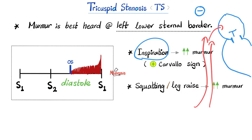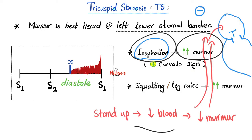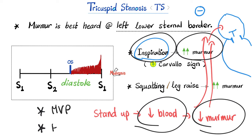Less blood means less murmur. For example, if you stand up suddenly, blood pools into the ankles away from the heart, decreasing blood across the tricuspid valve and decreasing the intensity of the murmur. The rule of more blood, more murmur and less blood, less murmur applies to all heart diseases — with two famous exceptions: mitral valve prolapse and hypertrophic obstructive cardiomyopathy. Both topics have separate videos in this cardiology playlist.